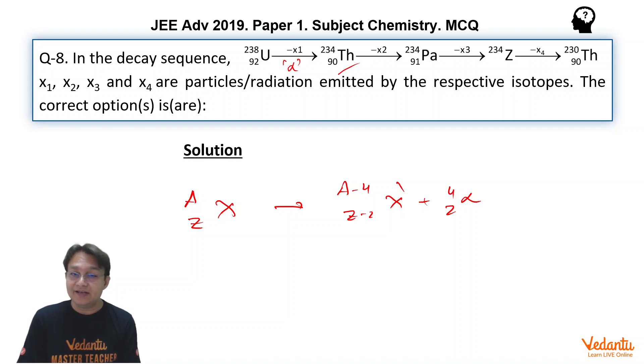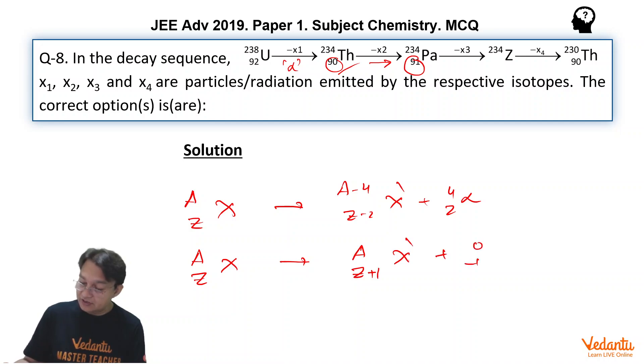234 to 234 in the next decay, if we can see X2, what is X2? So here we can see that 90 is changing into 91. This must be a beta decay because the beta decay is represented like AZX is changing into A, Z+1, X-dash plus -1, 0 electron. As you know that beta decay is related to what? Removal of an electron from nucleus. So definitely this X2 must be a beta particle.